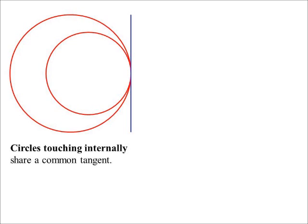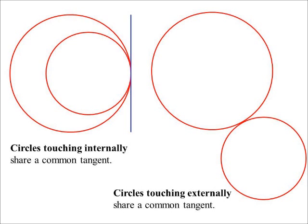Circles that touch internally share a common tangent at the point where they touch. You could also have two circles that touch externally, and they would have a common tangent between them.